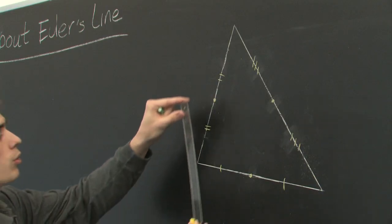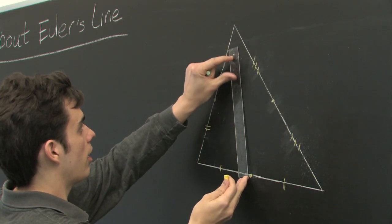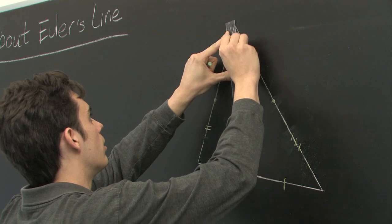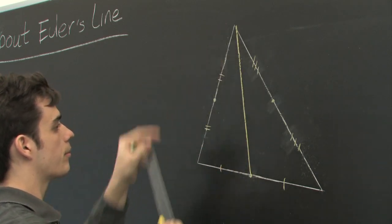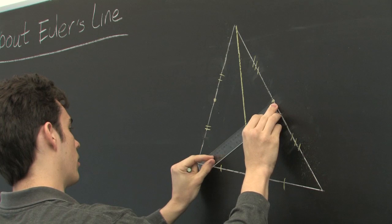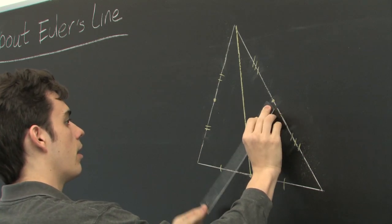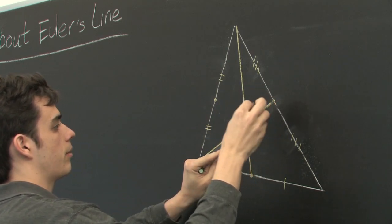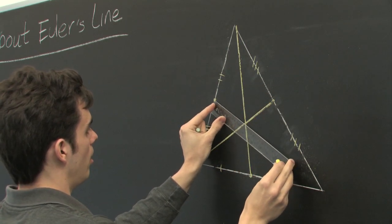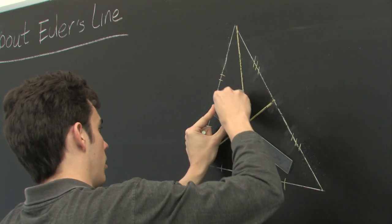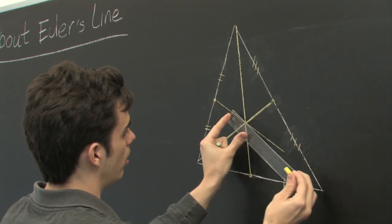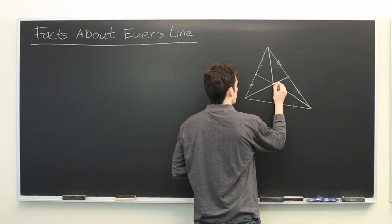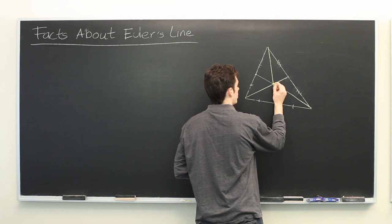Then, from the midpoint, we draw a line that connects it to the opposite vertex. Oops. There we go. And move to the last one here. Okay? So, this point is the centroid.